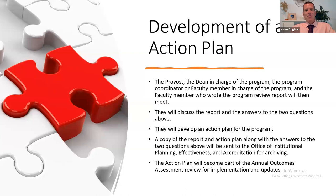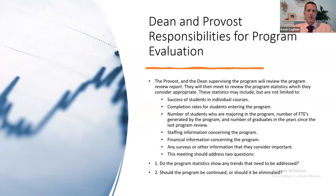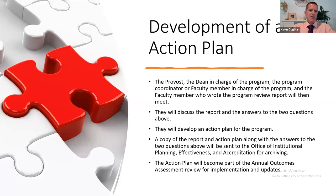A copy of the report and action plan, along with the answers to the two questions, will be sent to the Office of Institutional Planning, Effectiveness, and Accreditation for archiving. The action plan will then become part of the annual outcomes assessment review for implementation and updates. Please check out the website for all of our presentations — there's great data and good analysis there. Thank you very much for coming today, and I appreciate your time.